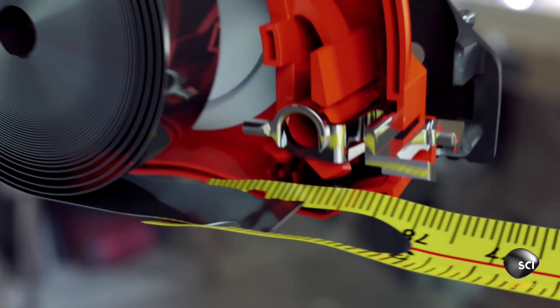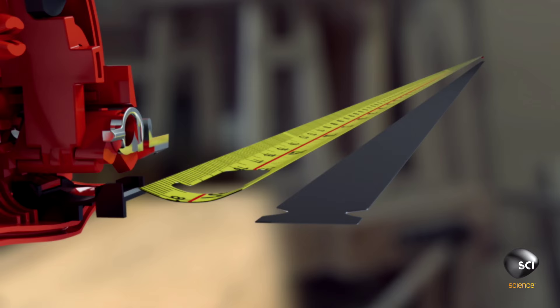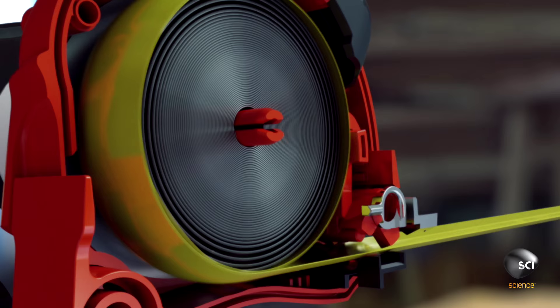The end of the measuring blade hooks onto a soft metal strip that's almost as long as the blade itself. As it coils around a central hub, it turns into a powerful spring that winds more tightly as the blade slides out.